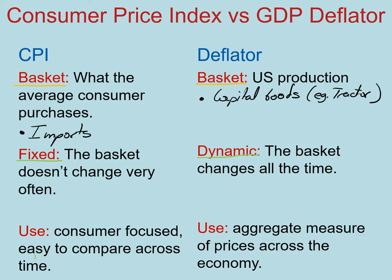It's hard to declare a winner here. These two are very different and we use them for very different purposes. Most of the time when we're using the consumer price index, we're trying to focus on consumers and comparisons across time — for example, in adjusting contracts according to the purchasing power of contracts, we use the CPI. On the other hand, if we need an aggregate measure of prices across the entire economy, we want to use the GDP deflator because it encompasses all of the economy.